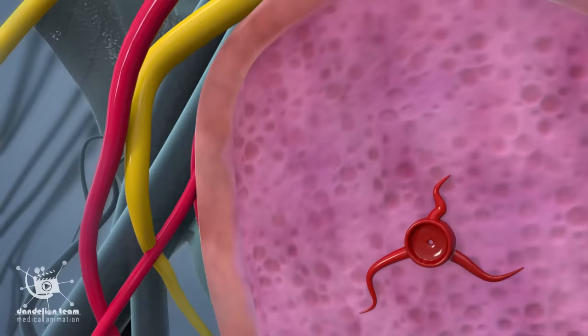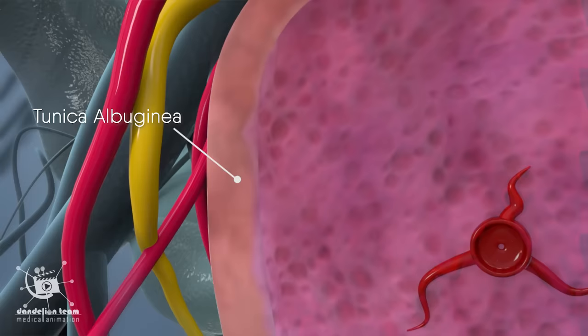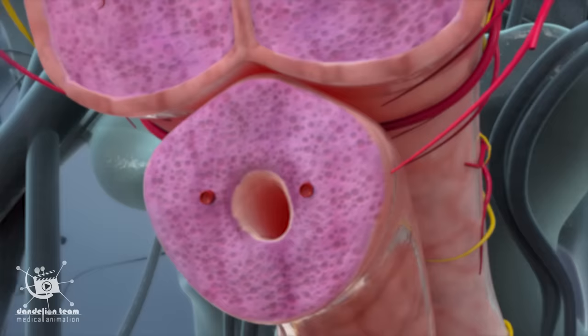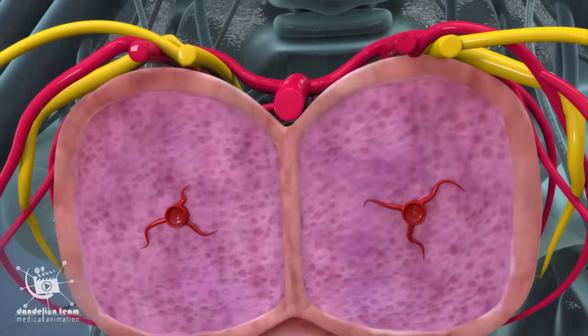The membrane surrounding the corpus cavernosum is called the tunica albuginea. It helps to trap the blood and sustain the erection. Erectile tissue surrounds the urethra, two main arteries, and several veins and nerves.